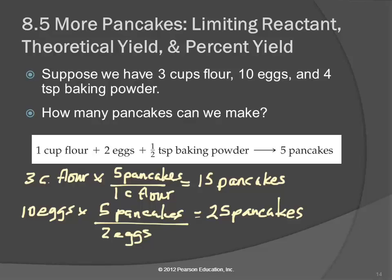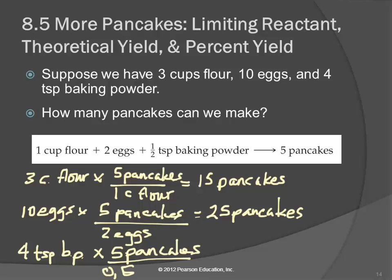We have four teaspoons of baking powder. To make five pancakes, it takes half a teaspoon — 0.5 teaspoons of baking powder. So that would make forty pancakes.